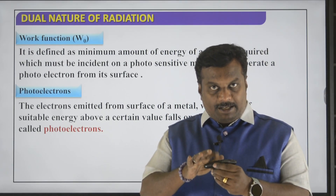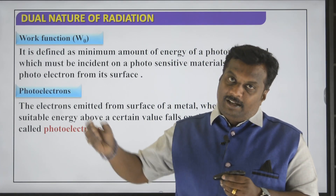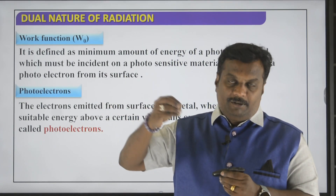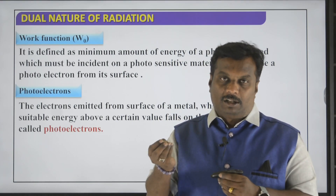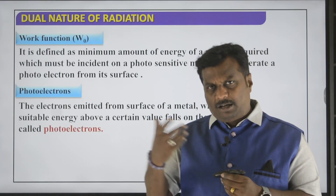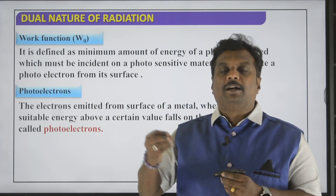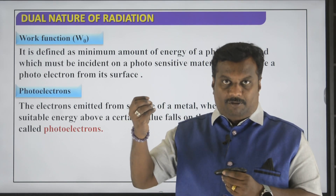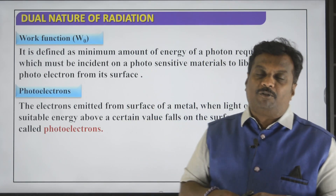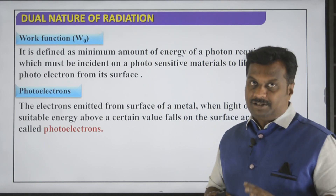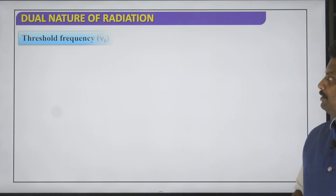Electrons come out from the surface. When light of suitable frequency — that is, on or above the threshold frequency — falls on the metal surface, photons give energy and the electrons that come out are called photoelectrons. This applies to the alkali metal surface.